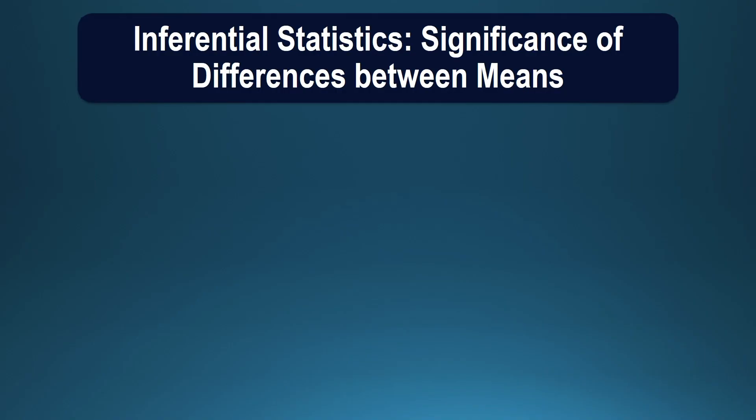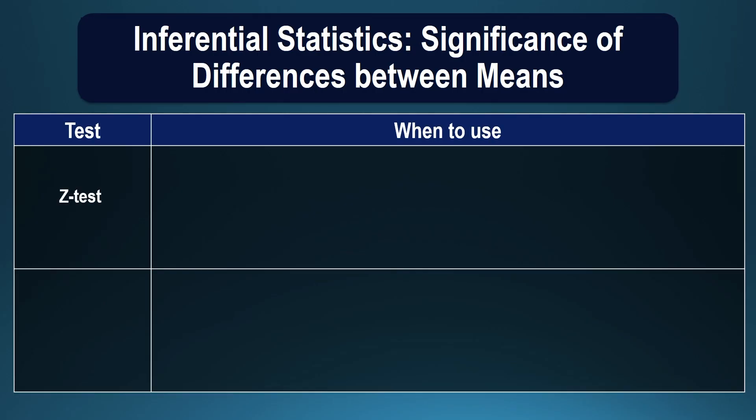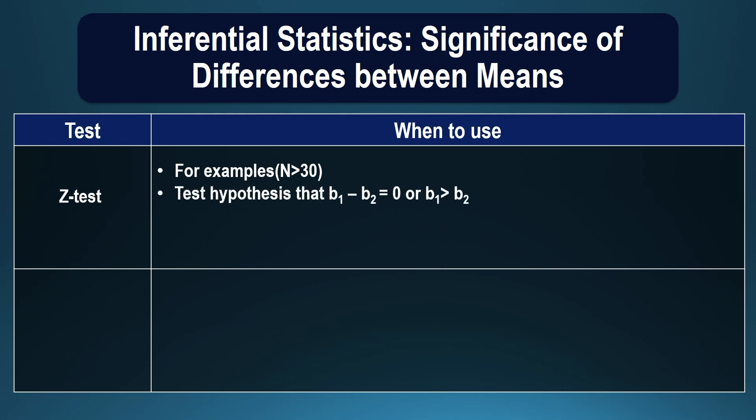If you are interested in finding out significance of differences between means — for example, whether boys perform better than girls on a mechanical aptitude test — you can compare the average performance of boys with the average performance of girls. You can use the z-test when the sample is greater than 30, that is a large sample, and you test the hypothesis that μ1 ≥ μ2, or μ1 − μ2 = 0.